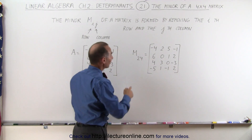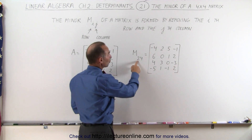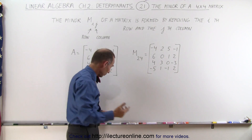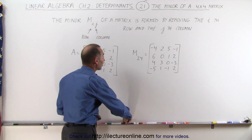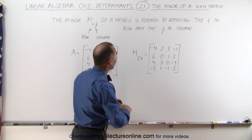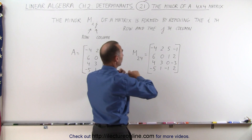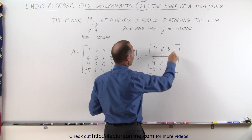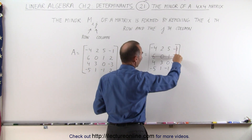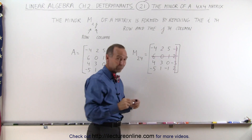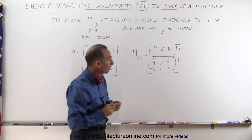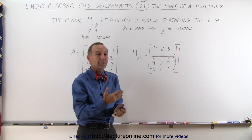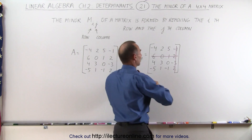Here we realize that the second row is the row we want to get rid of, and the fourth column is the column we want to get rid of. So we take another color pen — the second row is completely gone, and the fourth column is removed. Now notice we're left with 9 elements, so the minor in this case will be a 3x3 matrix.